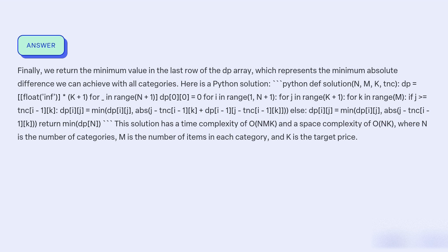The Python solution takes inputs n, m, k, t, and c. We initialize dp as a 2D array of size (n+1) by (k+1), setting dp[0][0] to 0. For i in range n+1, for j in range k+1, for each item in the category: if j is greater than or equal to the item cost, we update dp[i][j] with the minimum of its current value and the absolute difference between j and the target, plus dp[i-1][j minus the item cost].